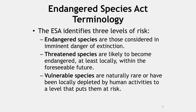The Act identifies three degrees of risk. Endangered species are those considered in imminent danger of extinction. Threatened species are likely to become endangered, at least locally, within the foreseeable future. Vulnerable species are naturally rare or have been locally depleted by human activities to a level that puts them at risk. Vulnerable species are often candidates for future listing as endangered species. For vertebrates, a protected subspecies or a local race or ecotype can be listed as well as an entire species.